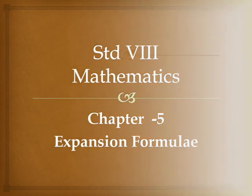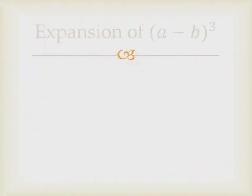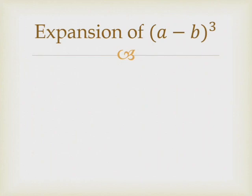Today we'll see the expansion of (a minus b) cubed. Cube means multiplication of the same number three times, so we have a minus b multiplied three times: (a minus b) into (a minus b) into (a minus b). We keep the first bracket as it is, that is (a minus b), and write the next two brackets in the form of a square.